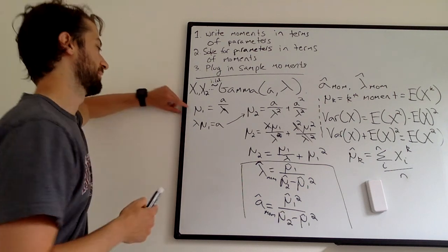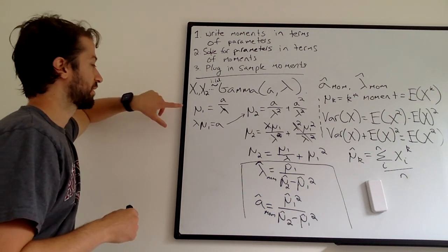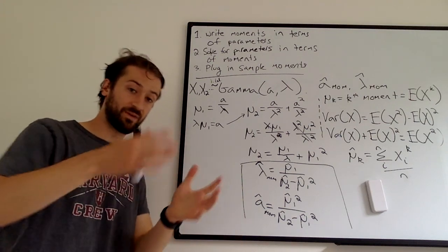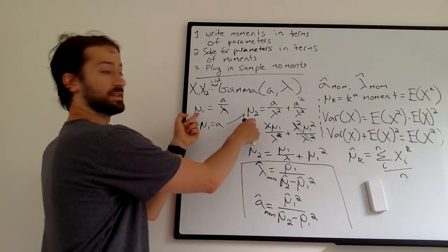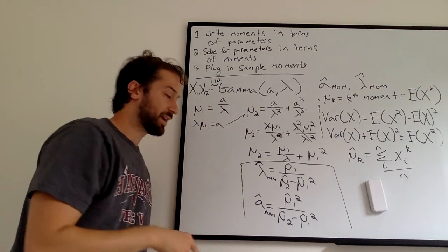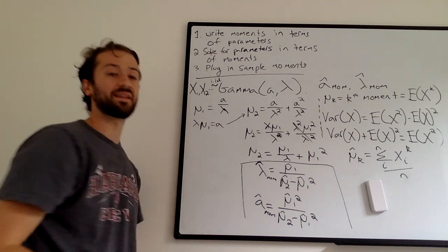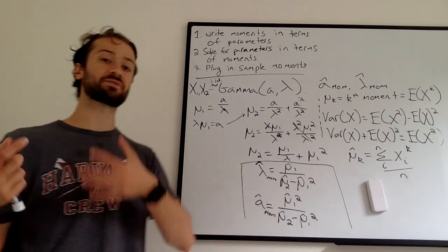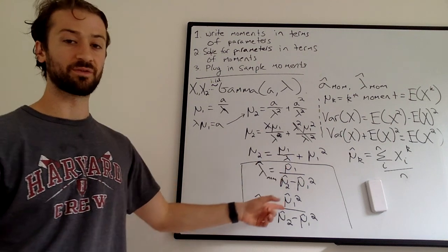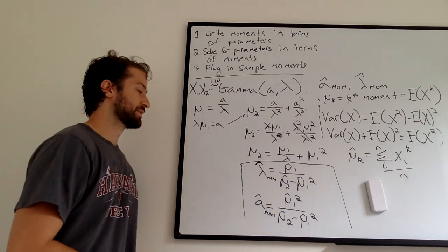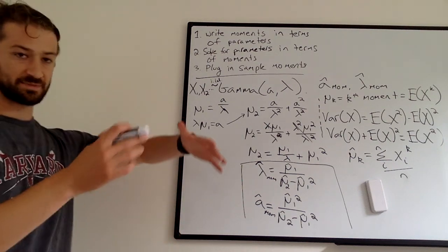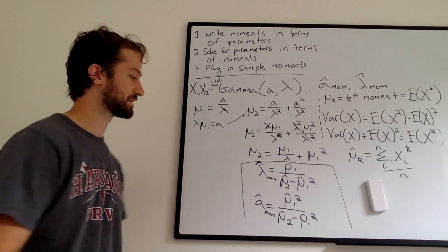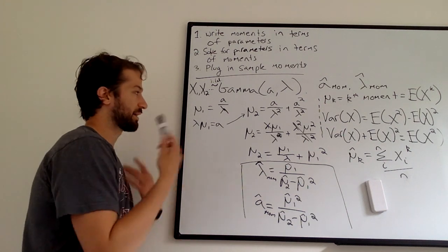We know that mu1 and mu2 are way easier to estimate than A and lambda. To estimate mu1, we just add up all the values and divide by n. To estimate mu2, we add up all the squared values and divide by n. We want to estimate A and lambda, so we solved for A and lambda in terms of mu1 and mu2. Since A and lambda are just a function of things we know how to estimate, we plug in our estimates for mu1 and mu2 and get our estimates for A and lambda. That's the intuition behind method of moments.